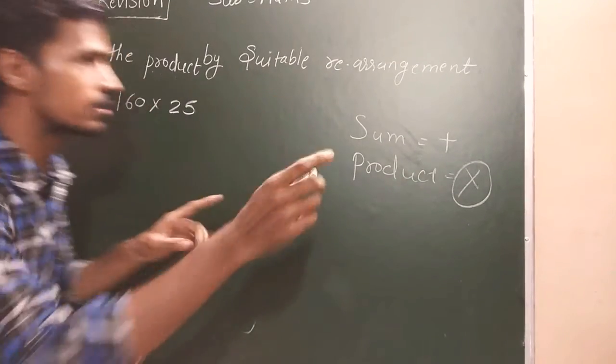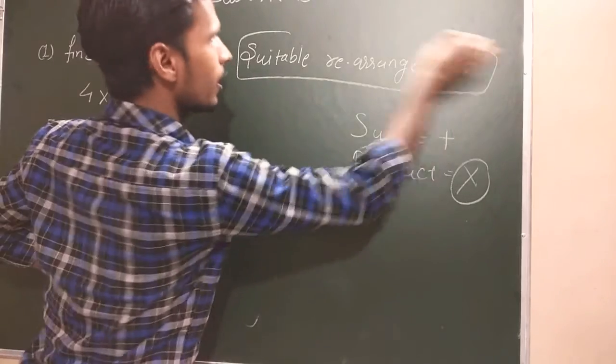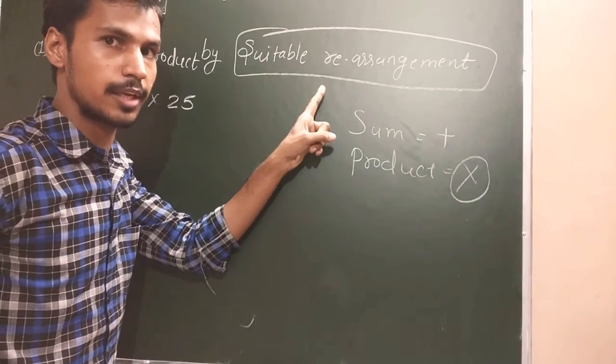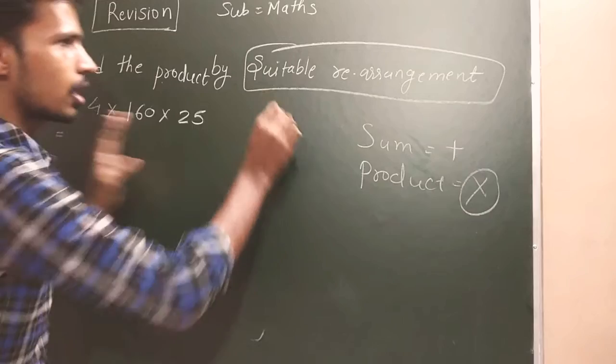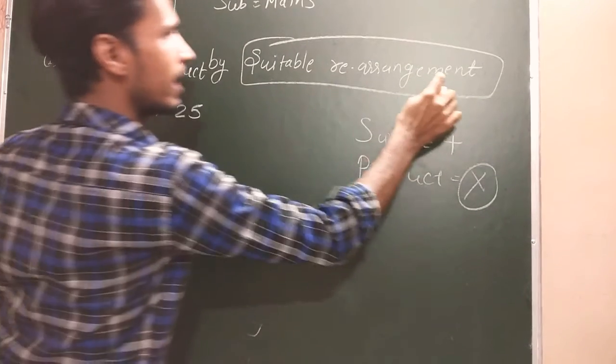How to use suitable rearrangement method? If I multiply 4 × 160 × 25, it will become very tough to do.